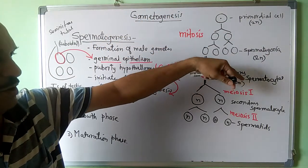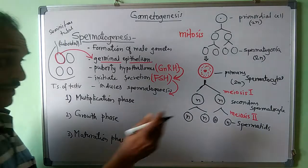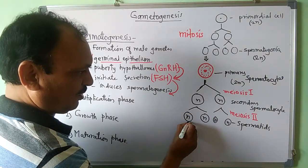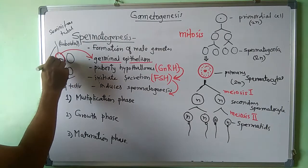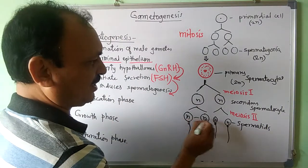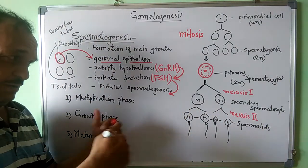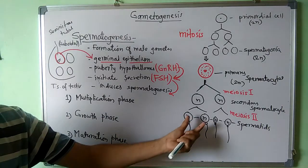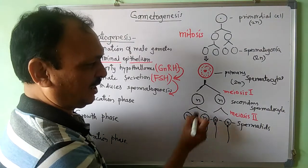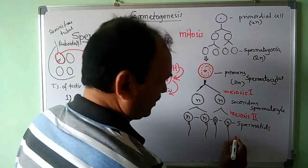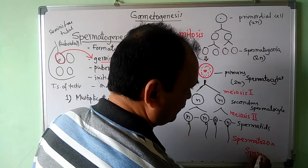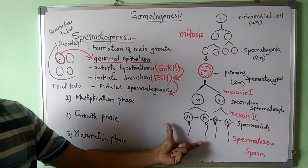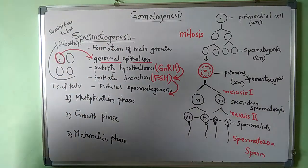After meiosis II, four haploid cells are formed and these are called spermatids. The progression is: primordial cells → spermatogonia → primary spermatocyte → secondary spermatocyte → spermatids. The spermatids are responsible for forming sperm. They remain attached to the Sertoli cells and are interconnected with each other. The heads of the sperms are attached to the spermatids, and they finally form the spermatozoa, also called sperm.